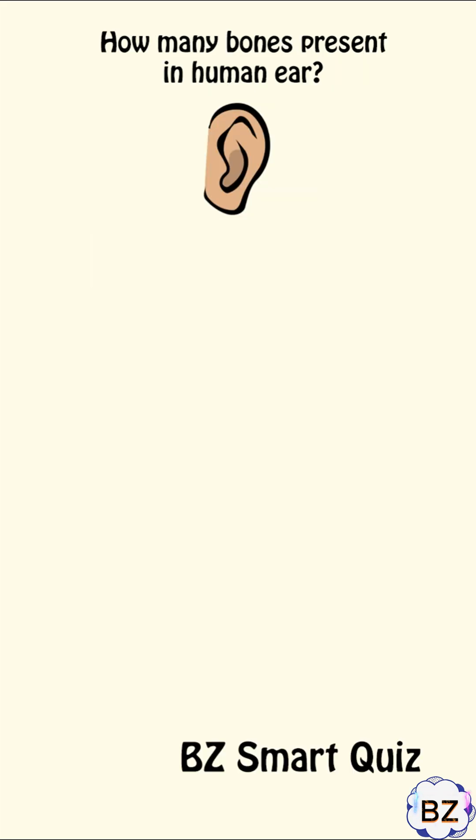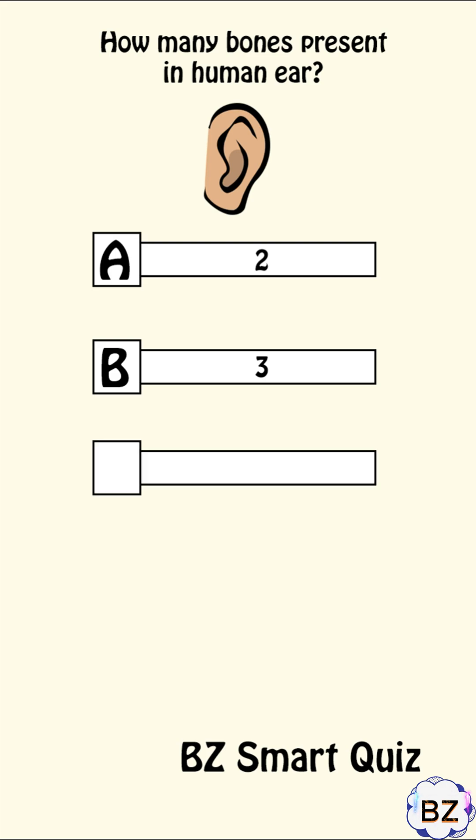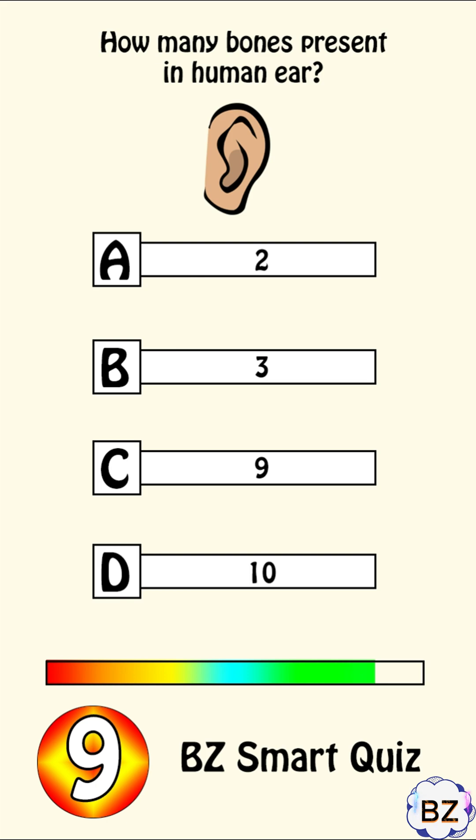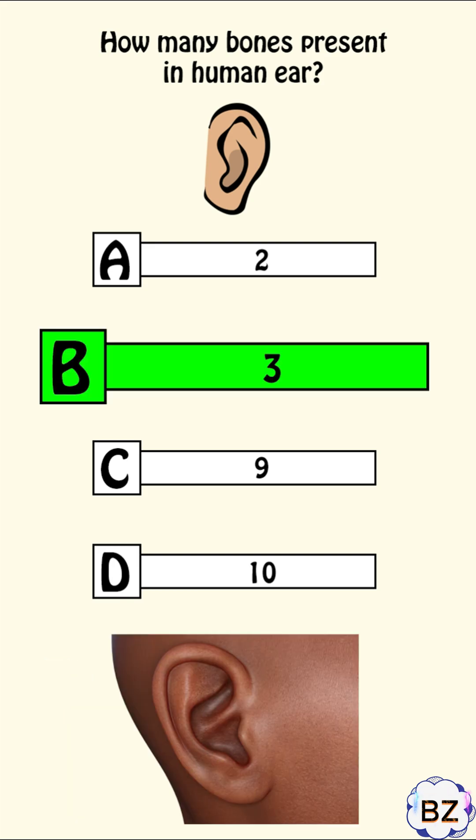How many bones present in human ear? A. 2, B. 3, C. 9, D. 10. Correct answer: B. 3.